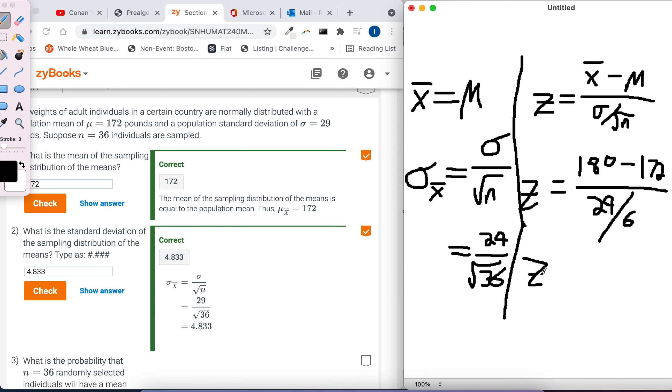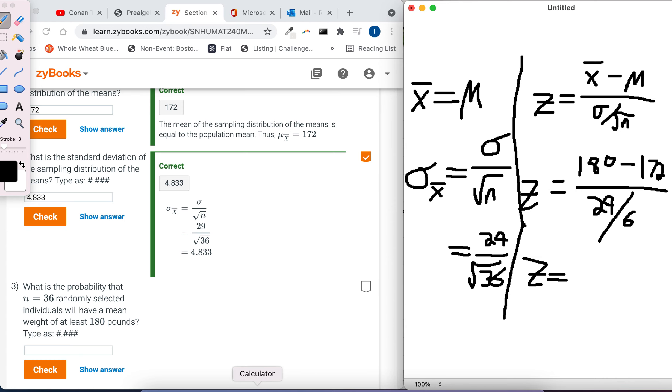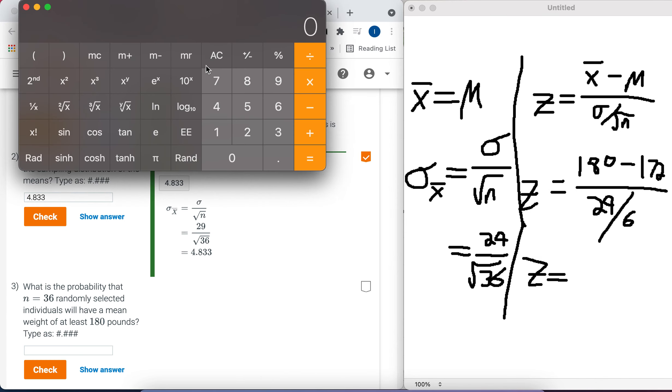So that will give us our z-score, and then I'll show you. You can just use an online website instead of using the table in the textbook. It's a little easier that way. But what I do with these problems is I calculate the denominator first. So 29 divided by 6, and I'm going to copy that. I'm going to hit Command-C on my Apple computer, or you could use Control-C. So I've got that copied. And now let's do the numerator. 180 subtracted by 172, and I'm dividing and pasting that denominator value.